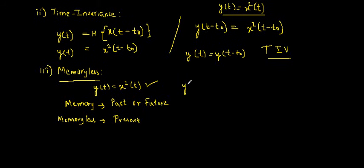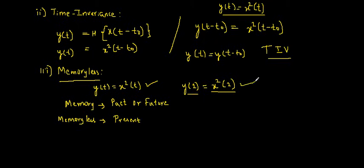For example, y(2) = x²(2), meaning the output at time 2 depends only on the input at that same time. There is no need to remember past or future values. Hence, this system is memoryless — it doesn't possess any memory.